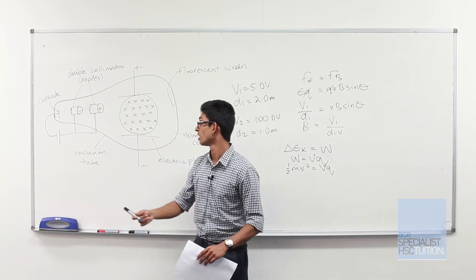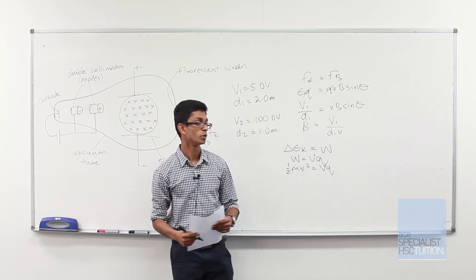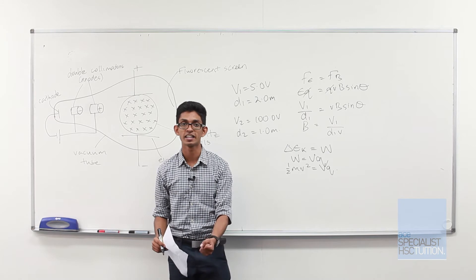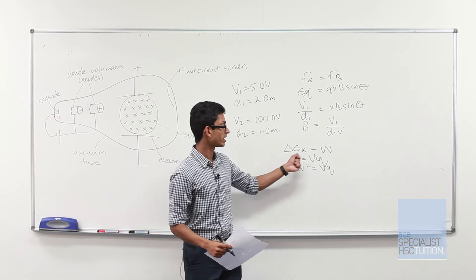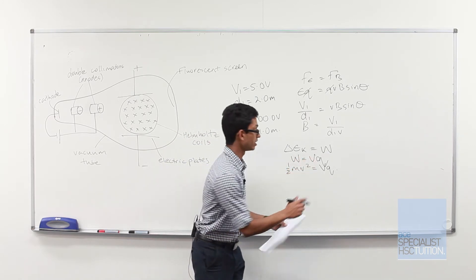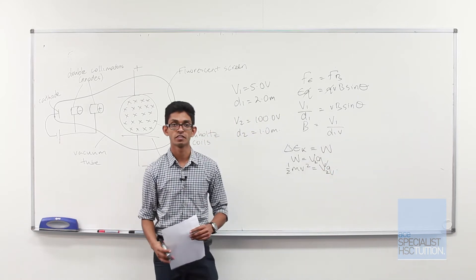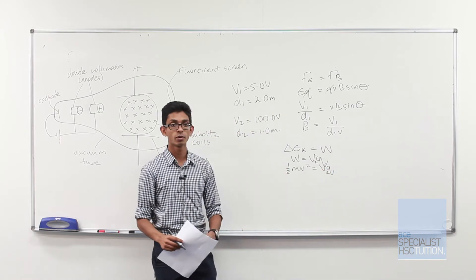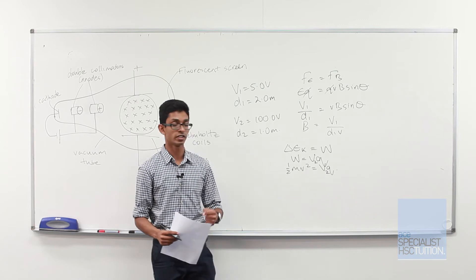We know that the work done on our electron through the vacuum tube is equivalent to the change in kinetic energy. We know that work is equal to V, and in this case V2, times the charge of the electron. Equating them out, we have half mv squared is equal to V2Q.